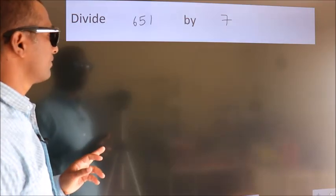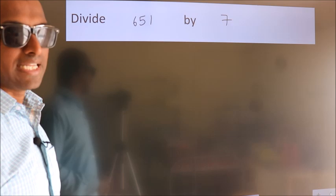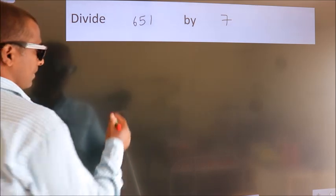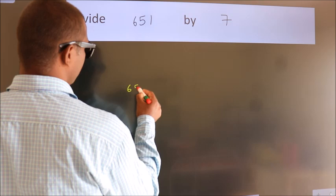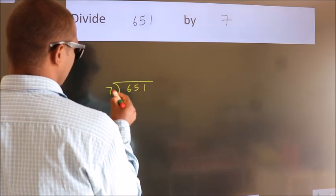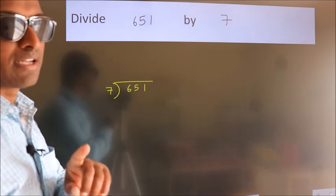Divide 651 by 7. To do this division, we should frame it in this way: 651 here, 7 here. This is your step 1. Next,